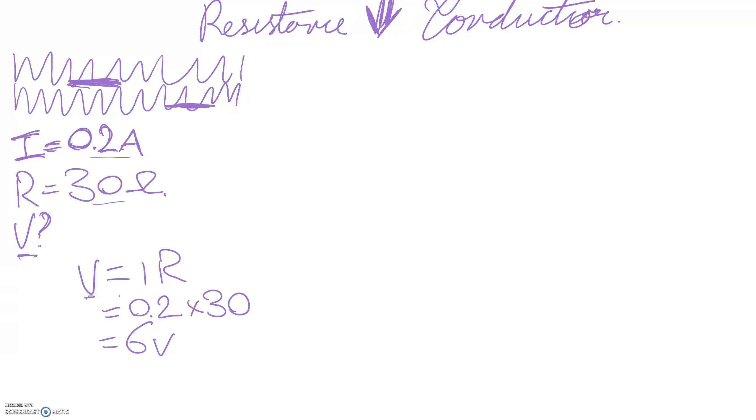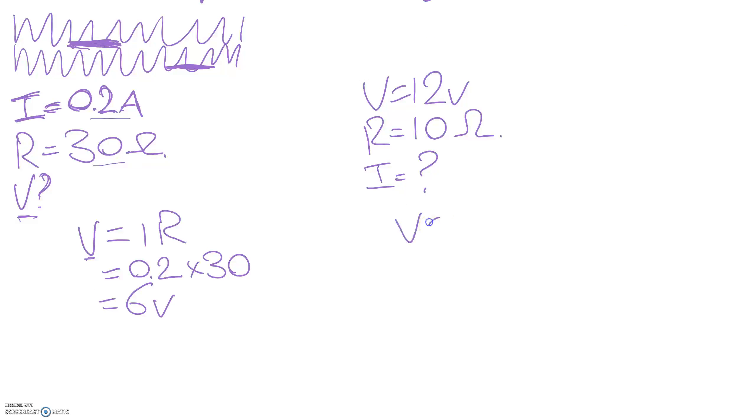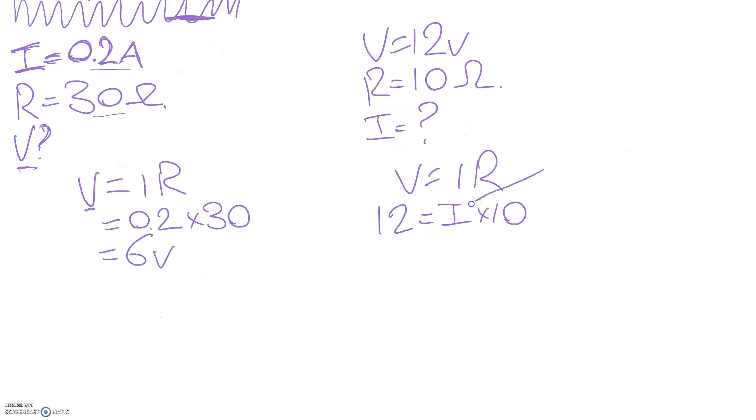Sometimes you need to do some rearranging. So let's say instead the question was the voltage is 12 volts. The resistance is 10 ohms. What's the current? Again, we're going to use Ohm's Law. We're still going to substitute. Now I need to get this guy, the unknown, on its own. That's the purpose of rearranging an equation. Get the unknown on its own so we can solve for it.